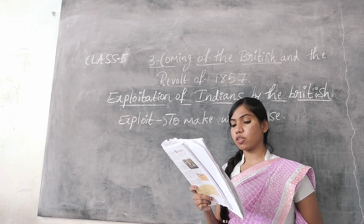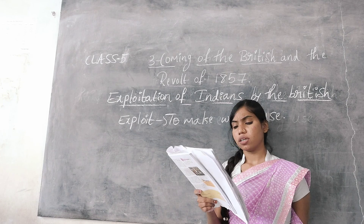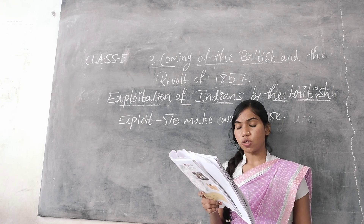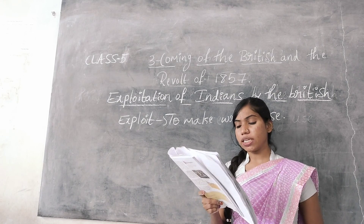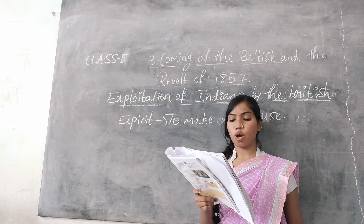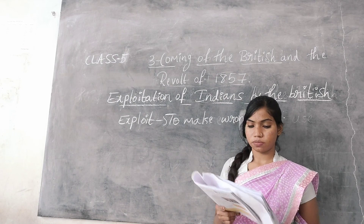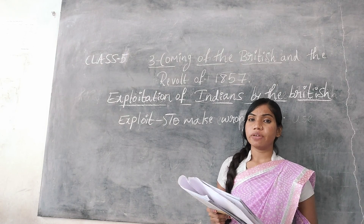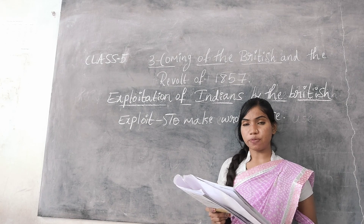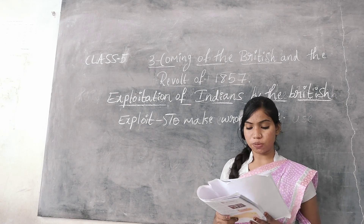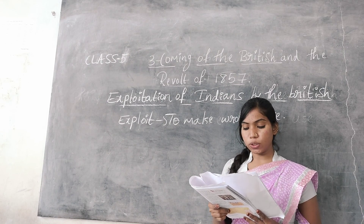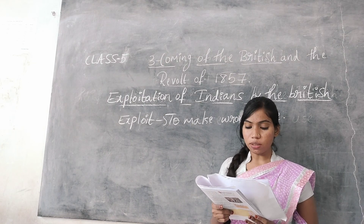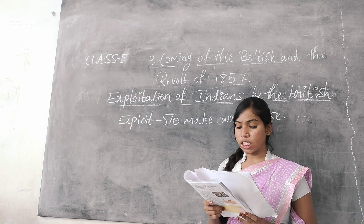The Indian cotton industry was also a victim of the British greed. Britain did not grow cotton due to the cold climate, but they had big cotton textile mills which required cotton.